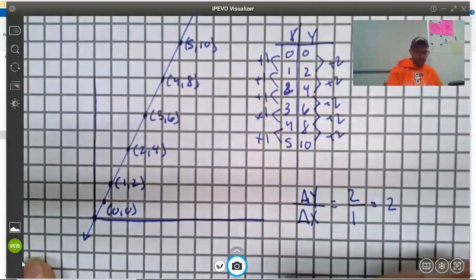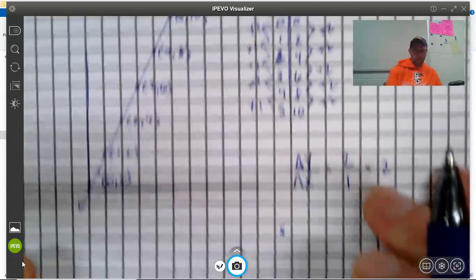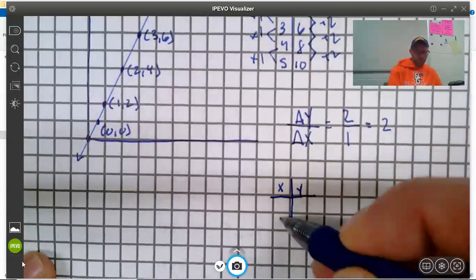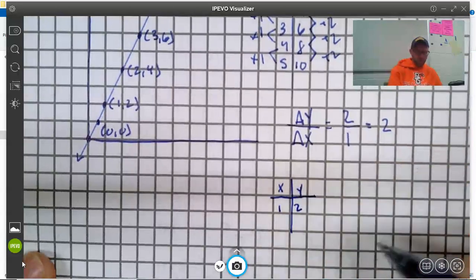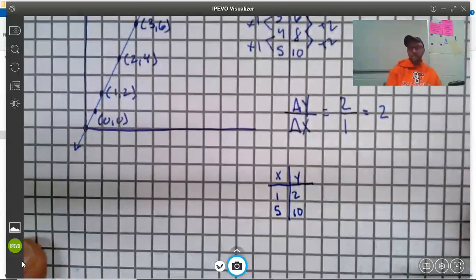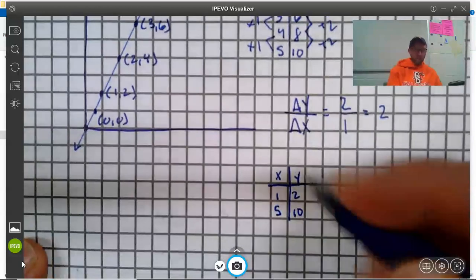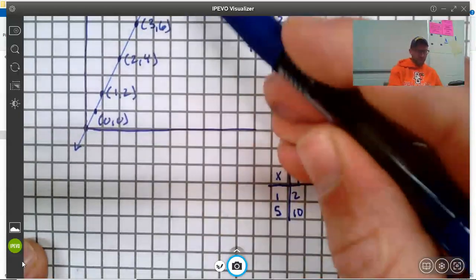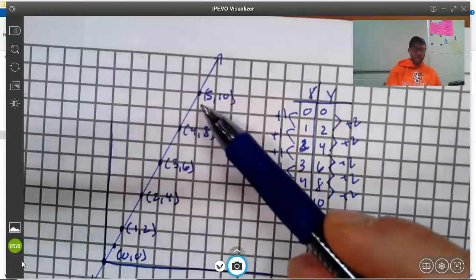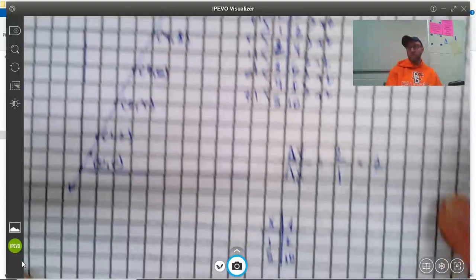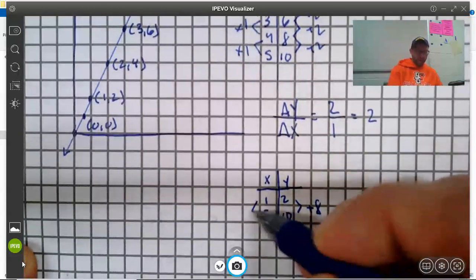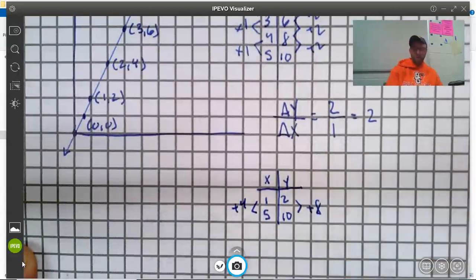But we could pick any two points on this line and use those two points to figure out that calculation. So, for example, I'll just take the table here. And let's simplify it by removing a bunch. Let's just do the point 1, 2 and the point 5, 10. So, if I jump straight from 1, 2 to 5, 10. So, I'm taking a big leap from 1, 2 to 5, 10. And I'll look at what's my change in y and my change in x? My change in y was plus 8.